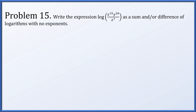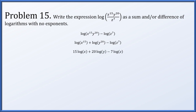Problem 15: write the expression log of x to the 15th times y to the 20th divided by z to the 7th as a sum and/or difference of logarithms with no exponents. First, the logarithm of a quotient splits as a difference. Our left term is a product, so we split that as a sum. Each term is the logarithm of a number to a power, so those powers come out as scalar multiples, giving us 15 log x plus 20 log y minus 7 log z.